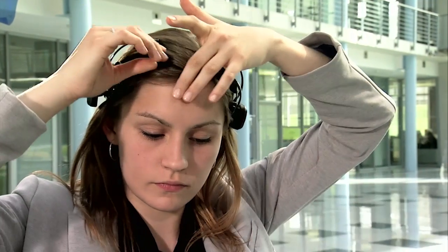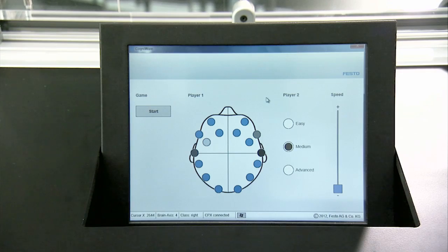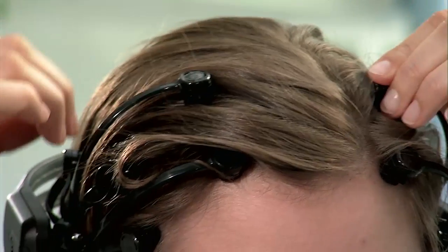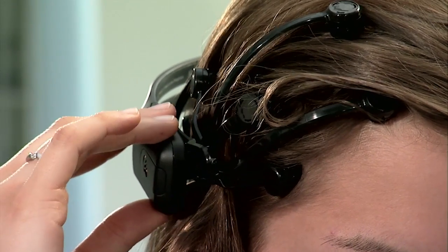The brain-computer interface is first of all fitted to the head of the wearer. Each of these little buttons measures the brainwaves at a specific point on the wearer's skull. The experiment can only begin after all the buttons are properly fitted.